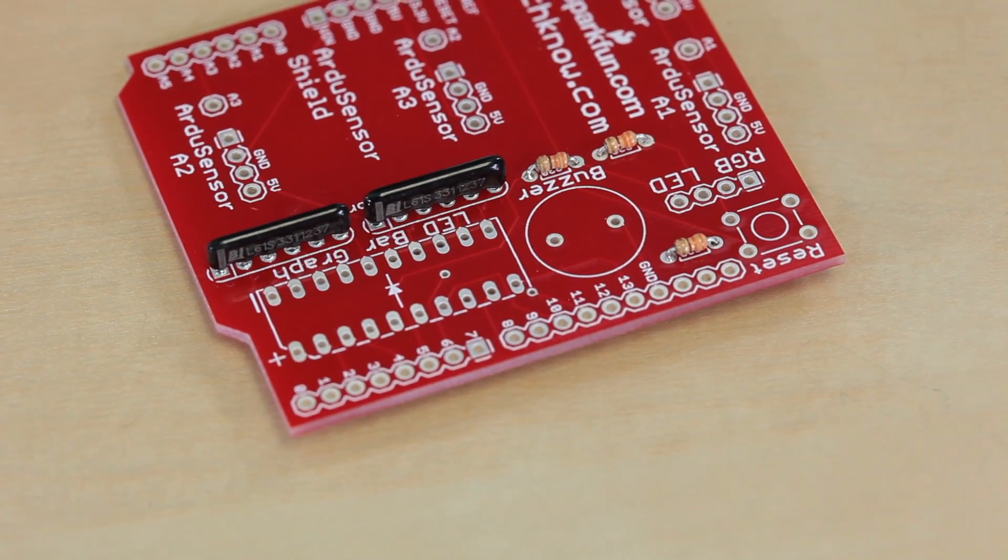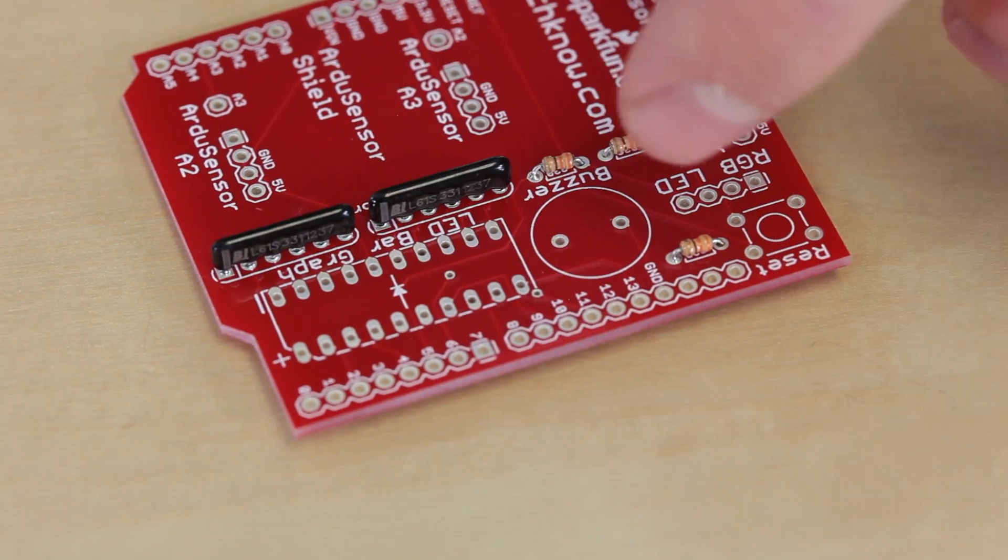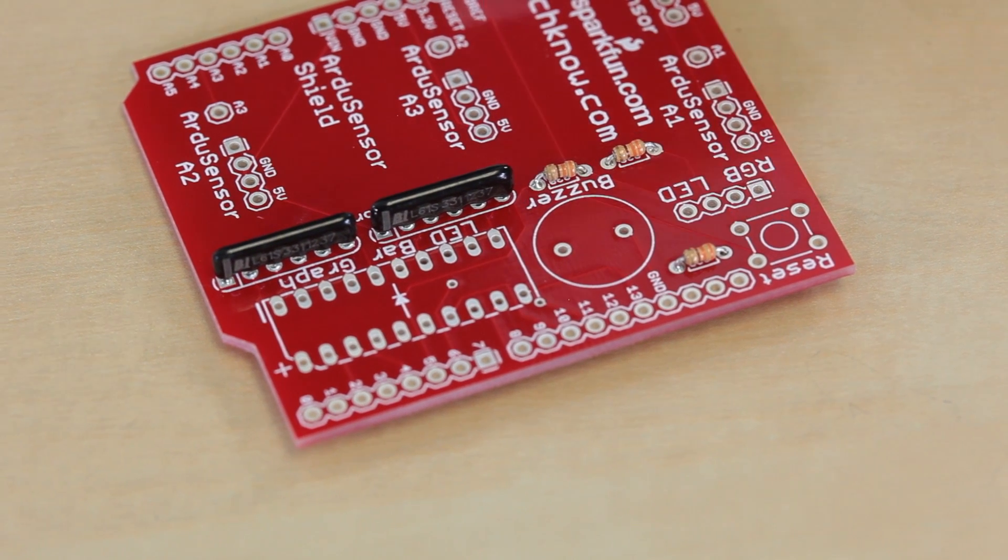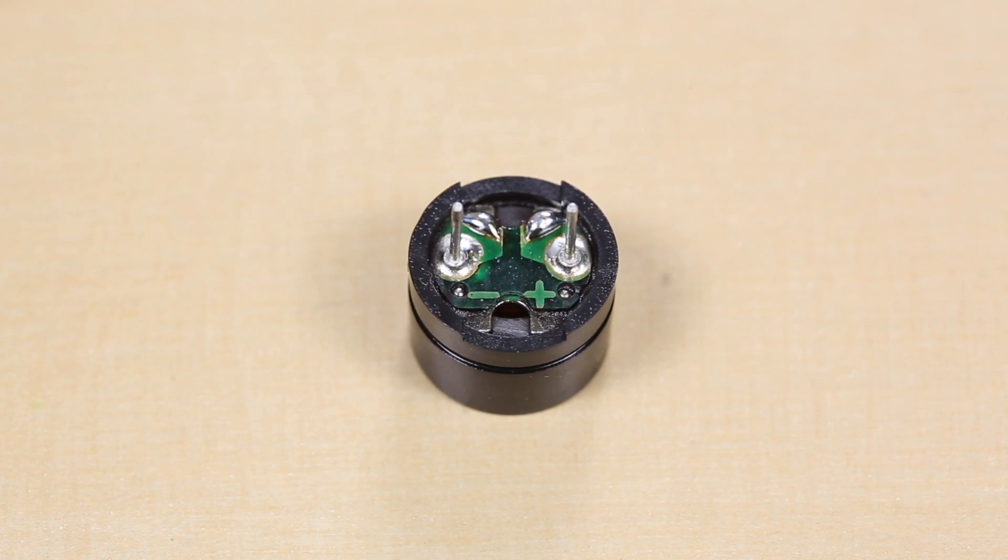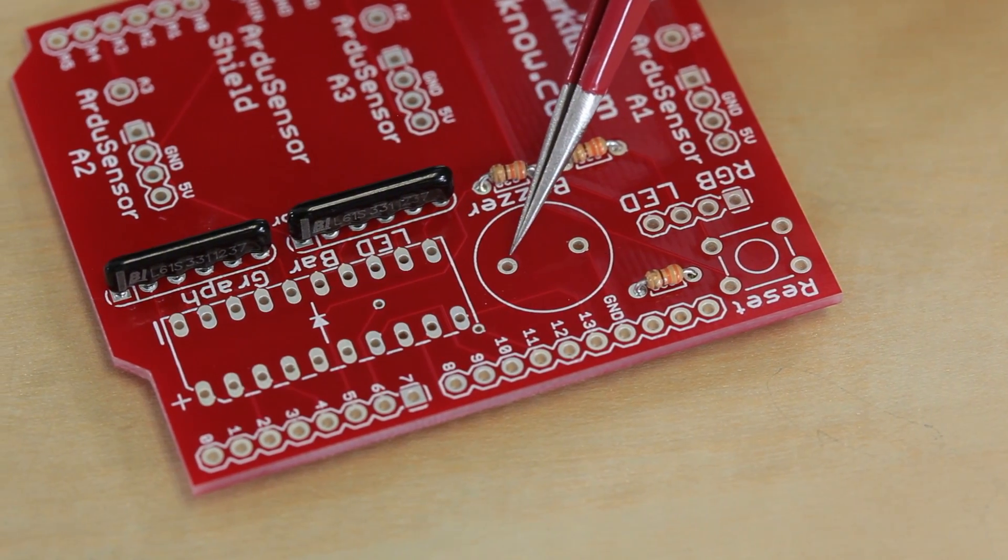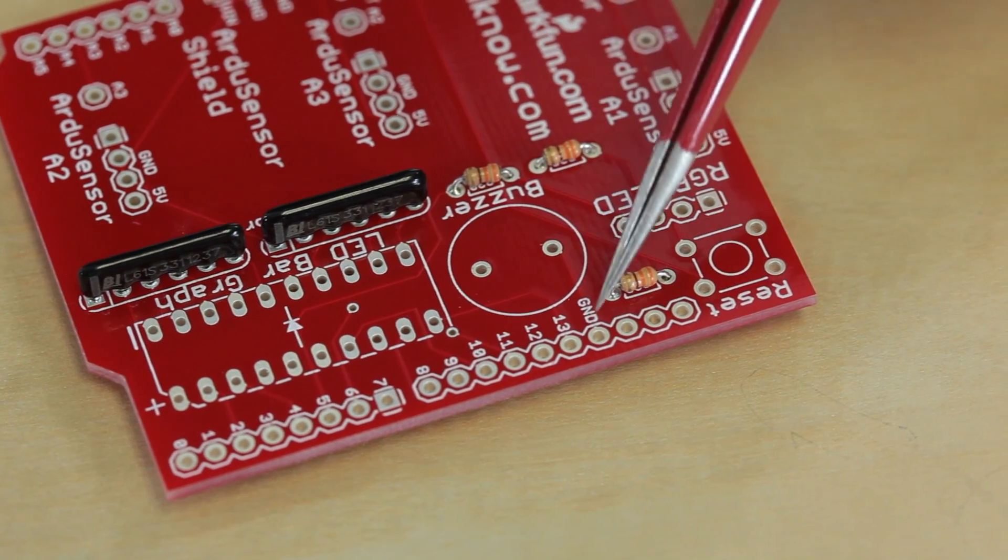Next we're going to install both the LED bar graph and the buzzer. Both of these components are polarized, meaning they have a certain orientation. If you look at the back of the buzzer, it's labeled with a plus and a minus right next to each lead. The positive will go here and the negative will go here, which is connected directly to ground.